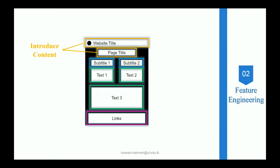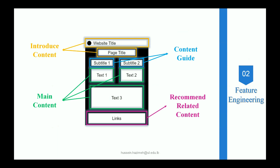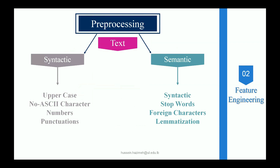To compute the similarity, we have features including content guide, recommended related content, and main content — four features total for our clustering algorithms. For pre-processing, we have two phases: syntactic and semantic. For syntactic pre-processing, uppercase characters are turned to lowercase, and noise characters are removed. For semantic pre-processing, we remove stop words, delete foreign characters, and perform text lemmatization — turning text into its original form.